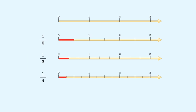So a unit fraction with a larger denominator is a smaller number. And a unit fraction with a smaller denominator is a larger number.